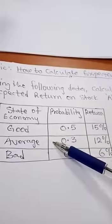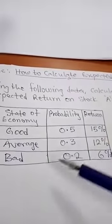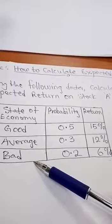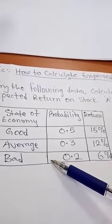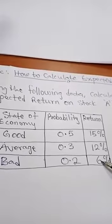And when the economy is bad, like the days of corona now, the probability is 0.2 and the expected return is 6%.